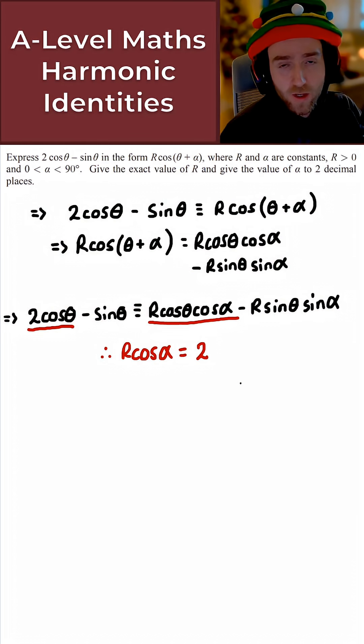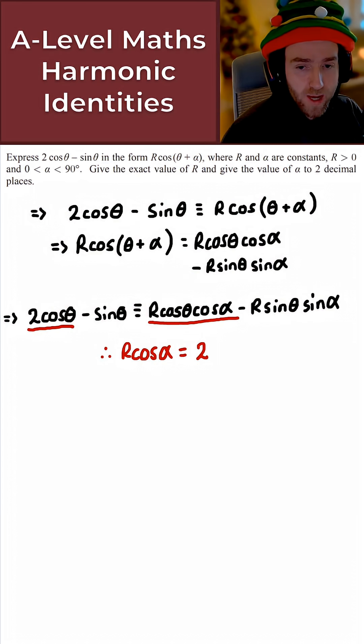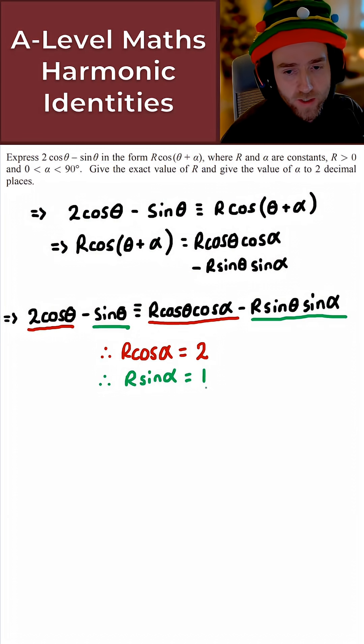And just notice here then how I'm using colour to show you how these coefficients match. And what I also get here then is R sine alpha is equal to 1. Again, just notice how I'm using this colour here to show you how these match.